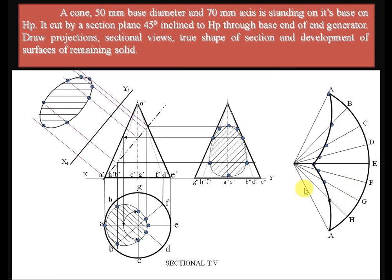Finally, label the sectional top view, sectional side view, true shape of the section, section plane, and the development of the surface. This is how to draw the development of the surface when a section is given to a solid. We have discussed the section of a solid and the development of the sectioned solid. If you have any doubts, please feel free to comment. Thanks for watching.